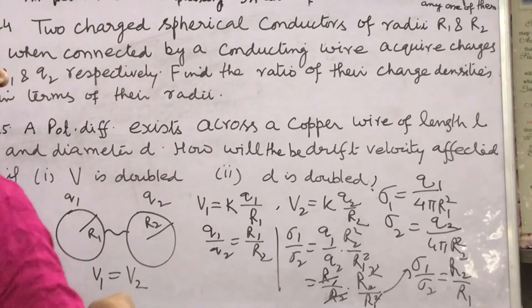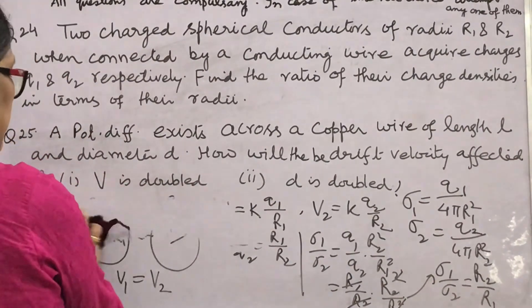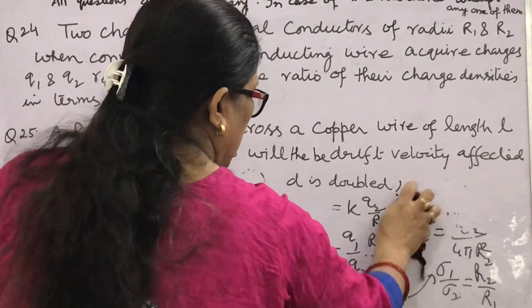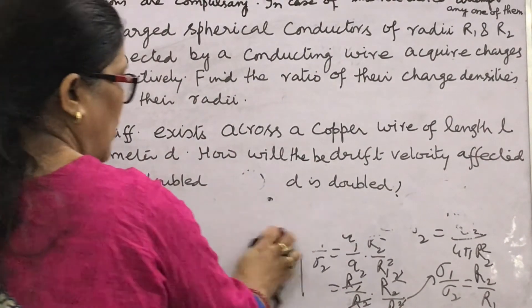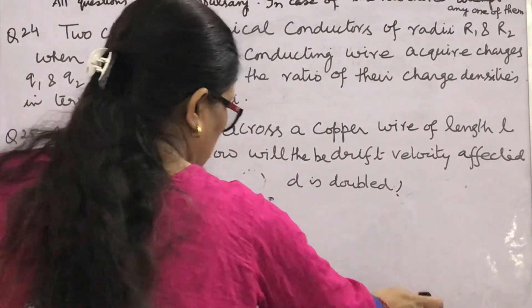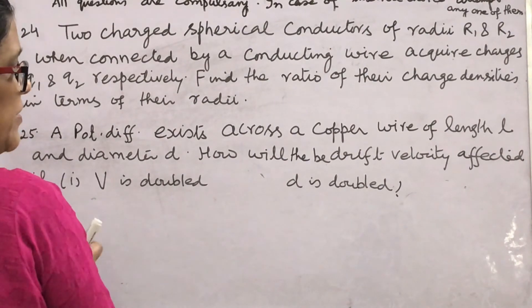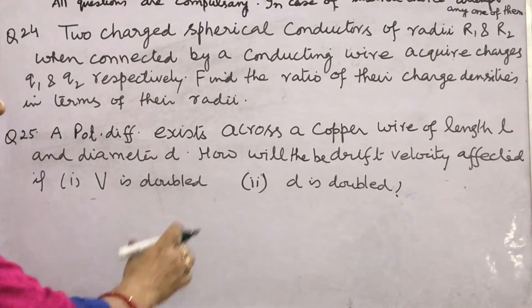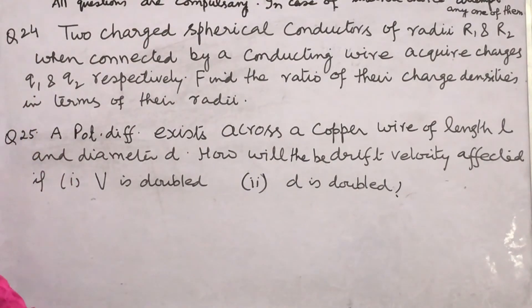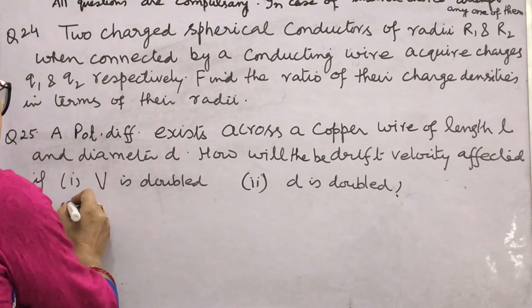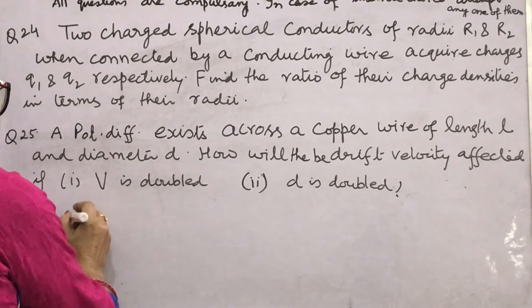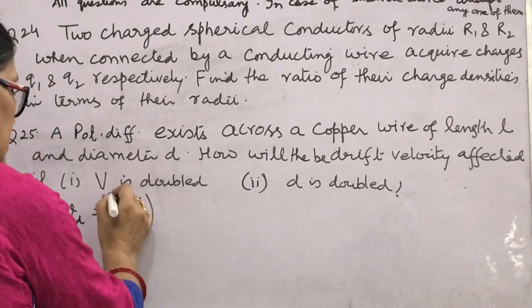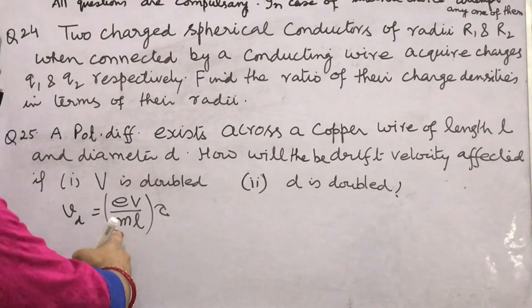Now, the choice question for Q24: a potential difference V exists across a copper wire of length L and diameter D. It is asked how drift velocity is affected if the potential difference is doubled and if D is doubled. You should know the relation for drift velocity: Vd = eV / (m·L/tau) — learn this relation and how to derive it.